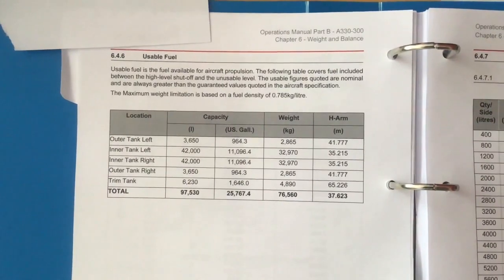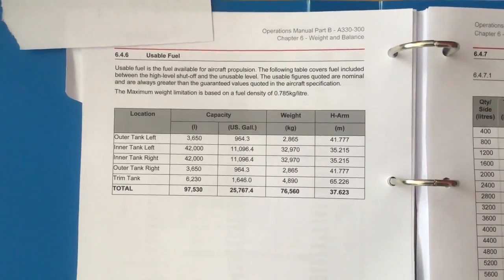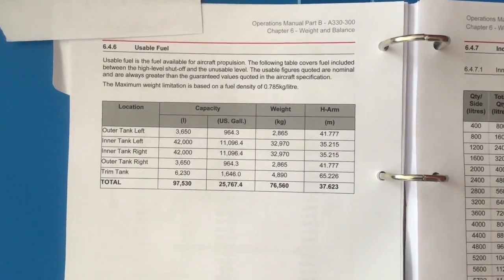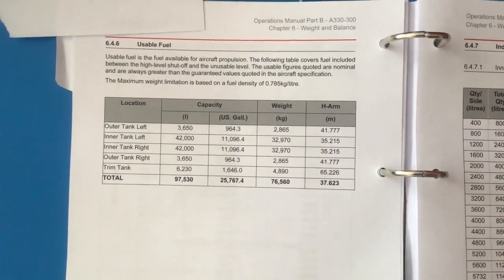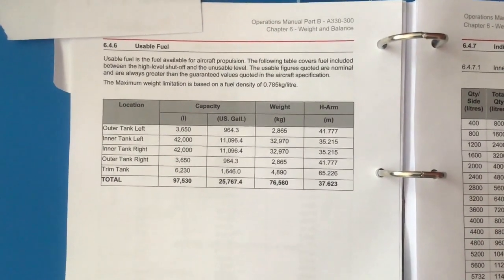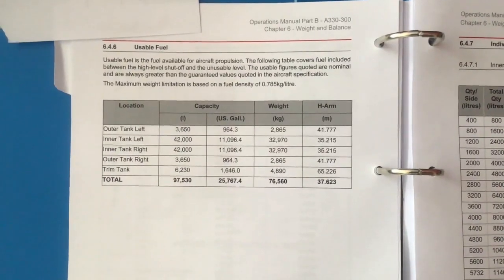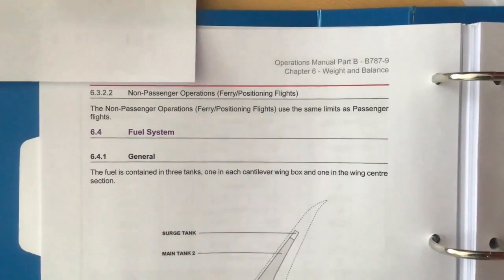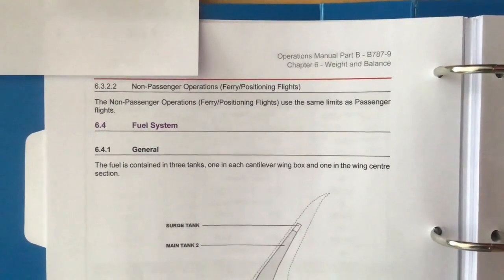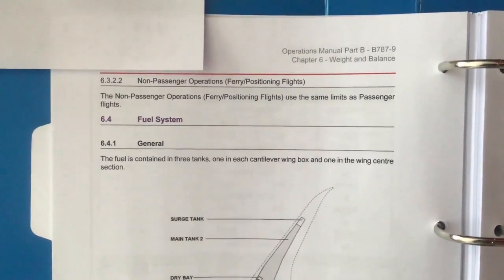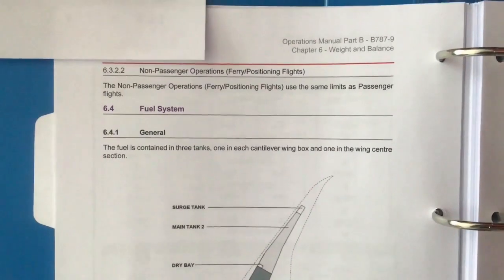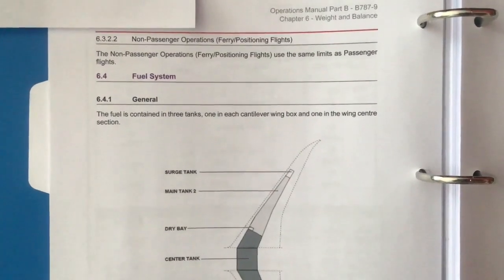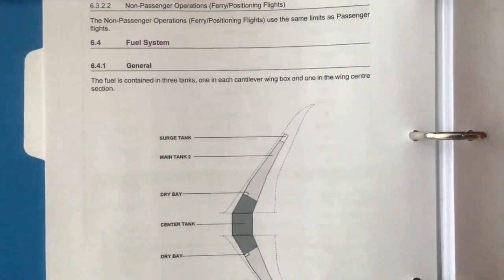And finally we will be moving on to the Boeing 787-9. The Boeing 787-9 is 63 meters in length. It has a maximum range of 14,800 kilometers. And in a single class configuration you can carry a maximum of 400 people. Again in the weight and balance manual it clearly shows the fuel tanks inside the wing.